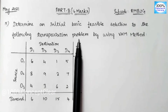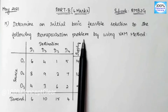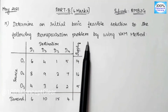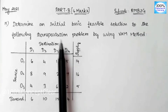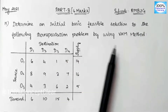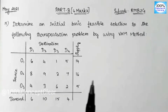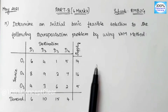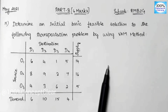If you need a detailed explanation, we already have videos in playlists — the link is in the description. Now, the first step is to check what type of sum we have: that is, a Minimization sum or a Maximization sum.